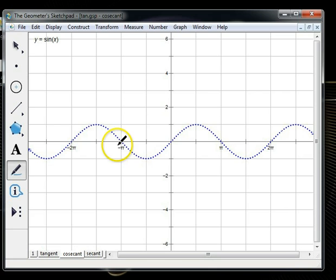And what we want to look for is everywhere that sine is crossing the x-axis, because that means the y-coordinate is 0, and since cosecant is the reciprocal of sine, the reciprocal of 0 is undefined, and so we will draw vertical asymptotes there at these places where sine is.